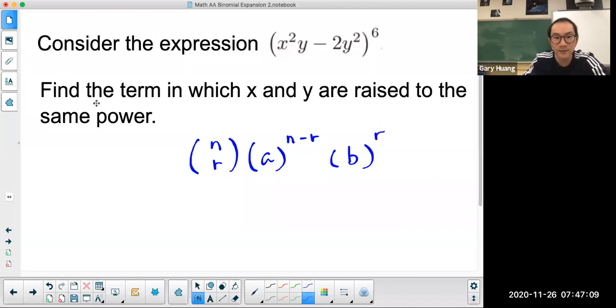You're asked to find the term so you don't know what the value of r is, but you know all the other information. n is 6, it's raised to the power of 6. a is the first term, so a is x squared times y, and b is the second term. Always include a sign: minus 2y squared.